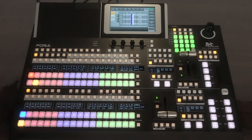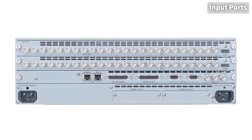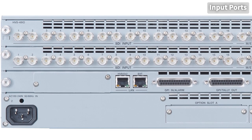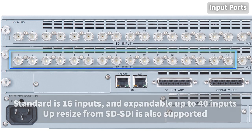This video explains how to operate signal setup of the HVS490. The input ports include 16 inputs of 3G HD to SDI as standard, and it can be expanded to a maximum of 40 inputs by option. SD to SDI can also be supported.